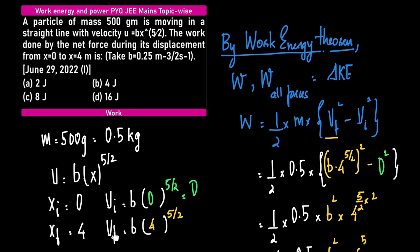What is Vf? Vf is that v when x equals xf. Xf equals 4, and therefore Vf equals b times 4 to the power 5/2.